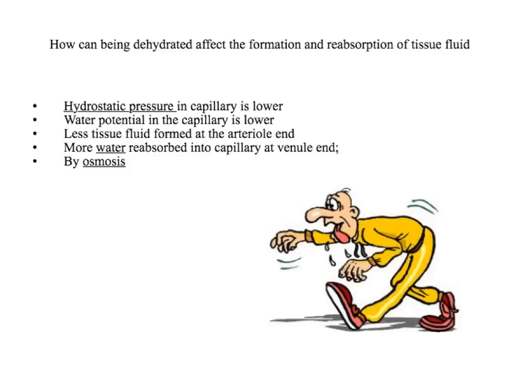Here we've got a person who's dehydrated. This is quite a challenging application question because you need to link several ideas together. If you've got less water in the blood — you're dehydrated — you're going to have a lower hydrostatic pressure, and you're also going to have a lower water potential because you've got less water in the capillary. Both of these will result in less tissue fluid being formed at the arterial end. And because you've got a more negative water potential in the capillary due to the lack of water, more water will be reabsorbed into the capillary by osmosis. So you're going to have very little tissue fluid accumulating and less tissue fluid being drained back into the lymph.